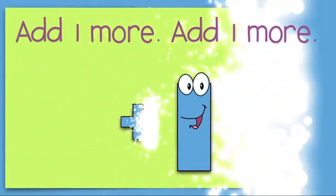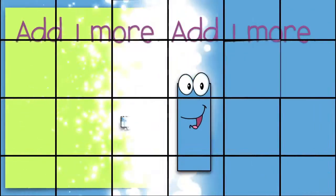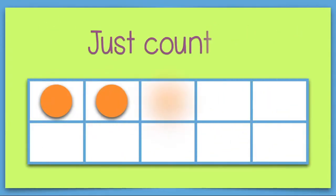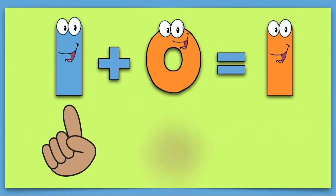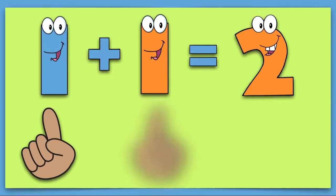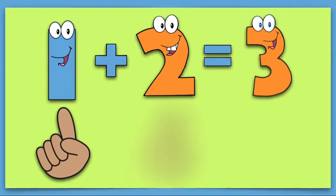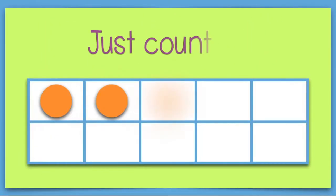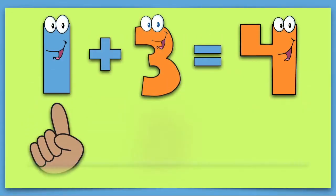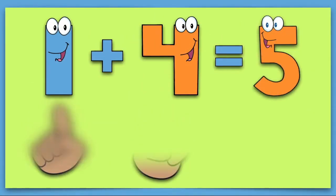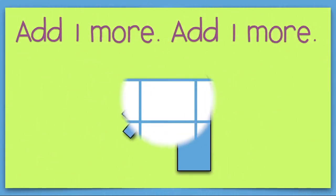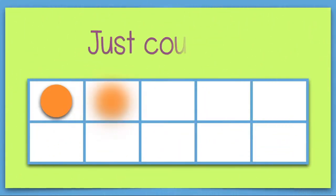Add one more, add one more, just count up. One plus zero equals one. One plus one equals two. One plus two equals three. One plus three equals four. One plus four equals five. Add one more, add one more, just count up.